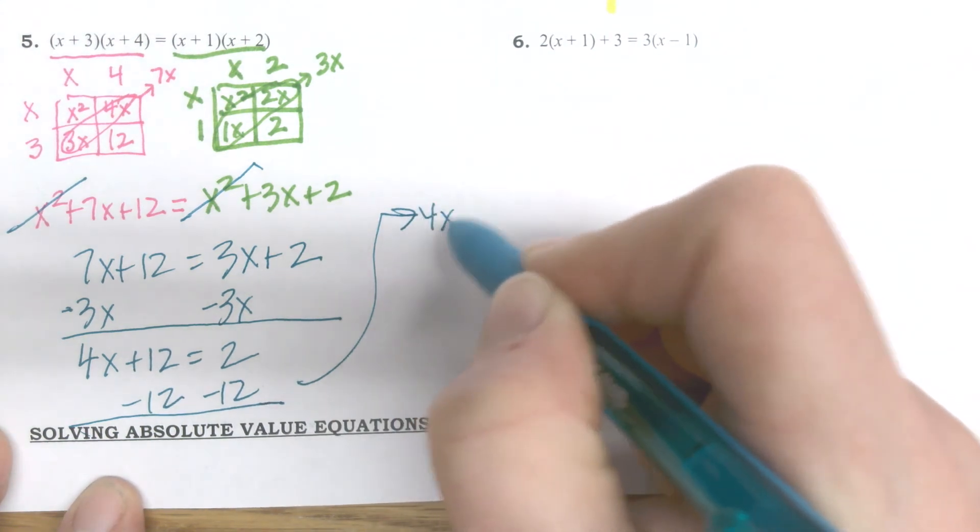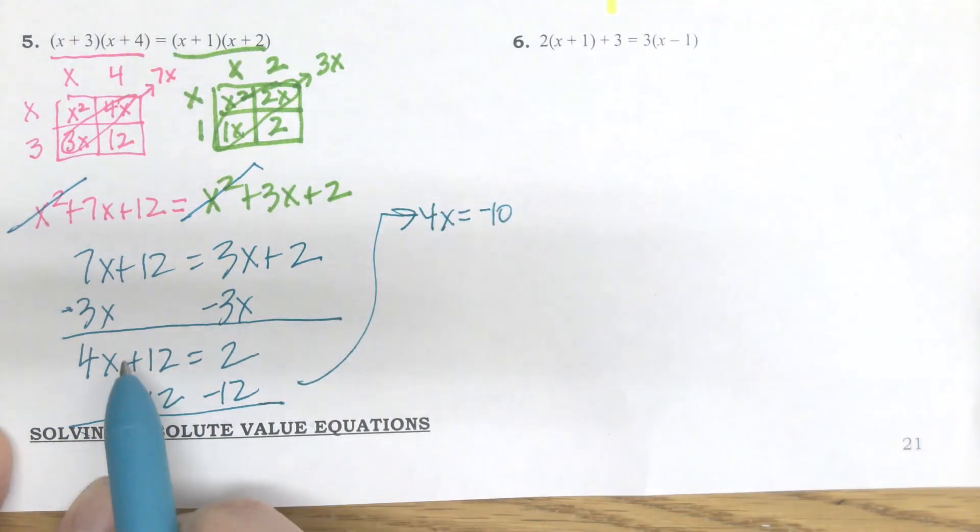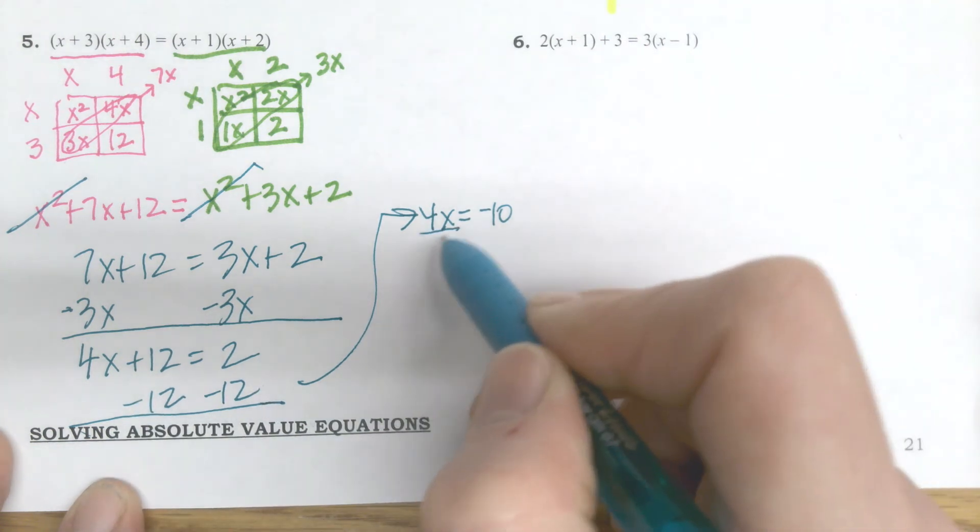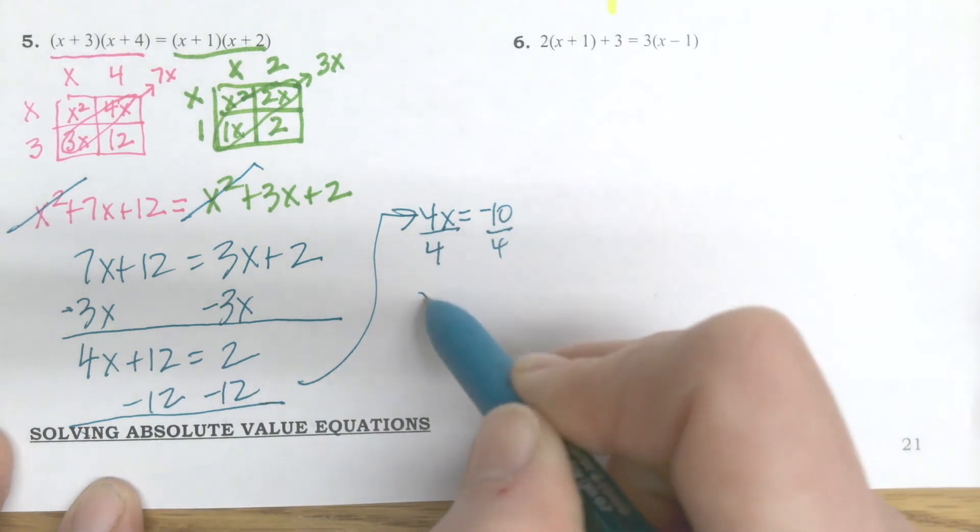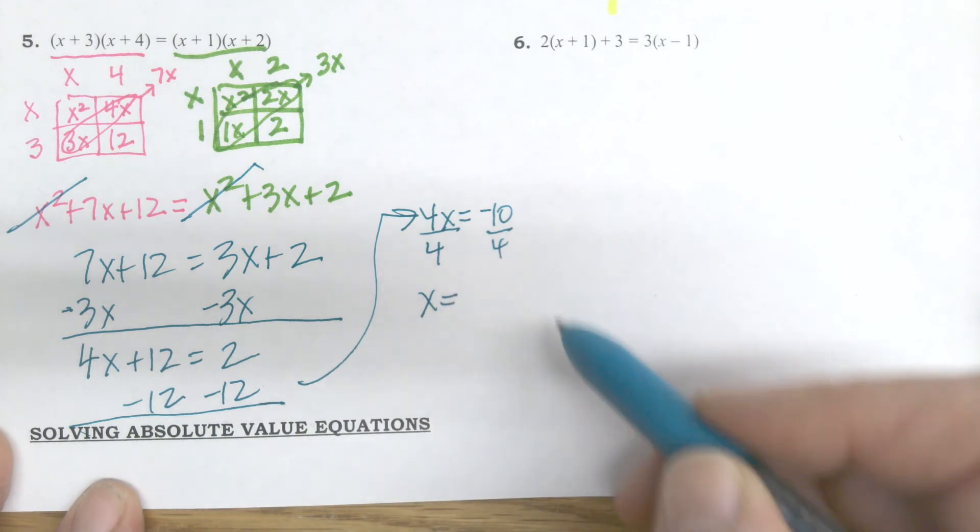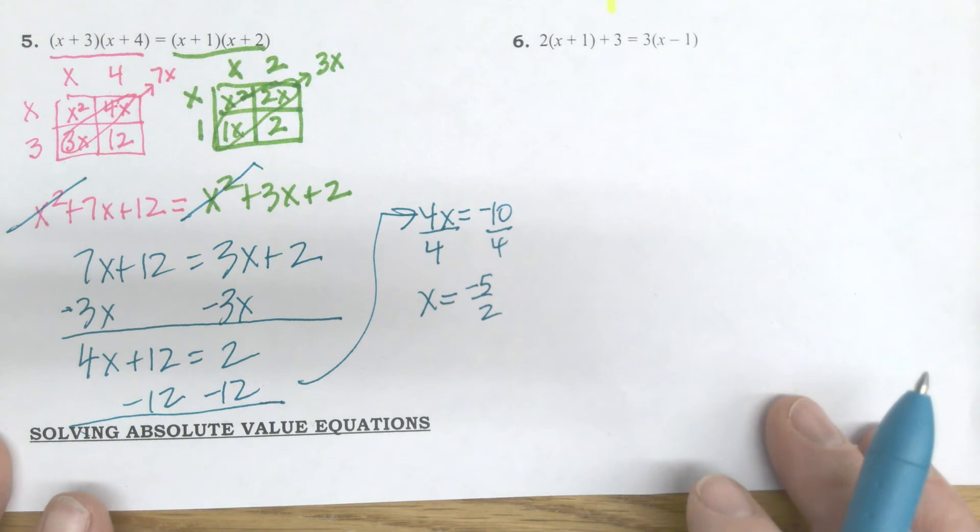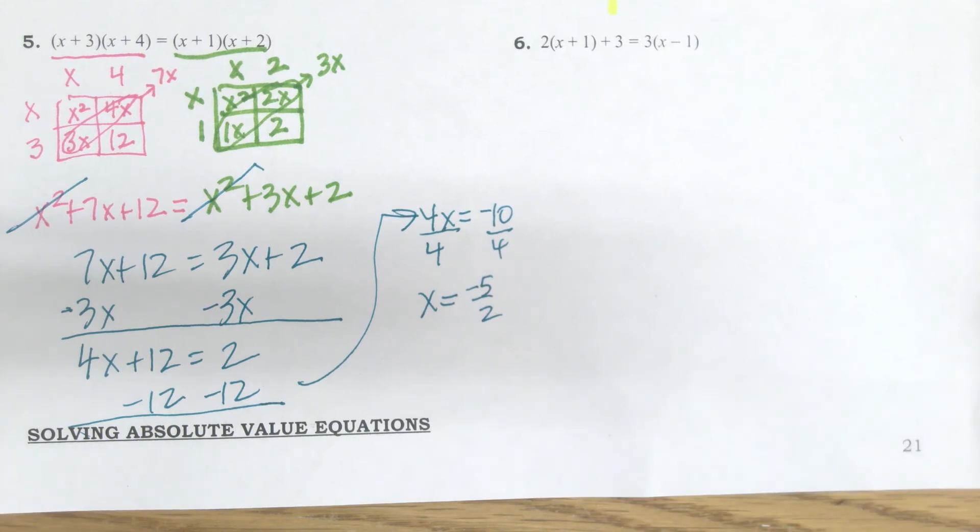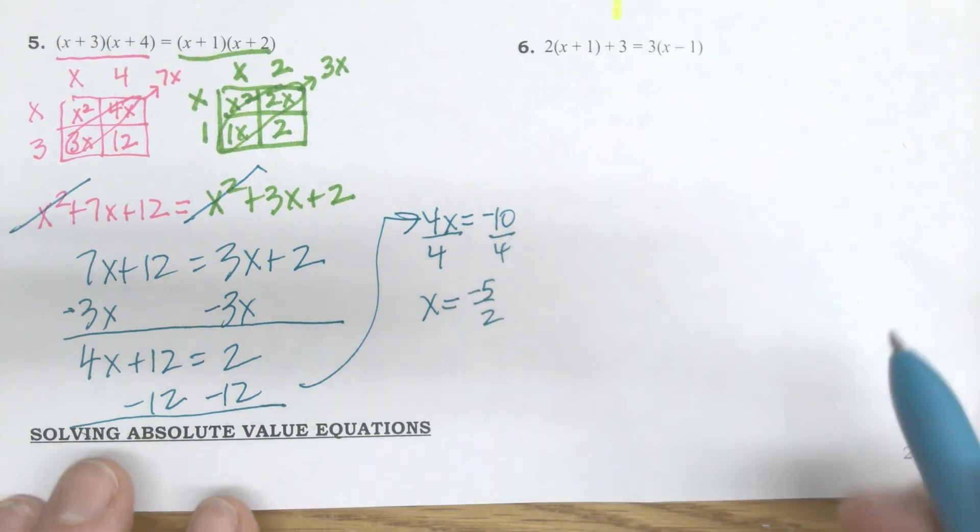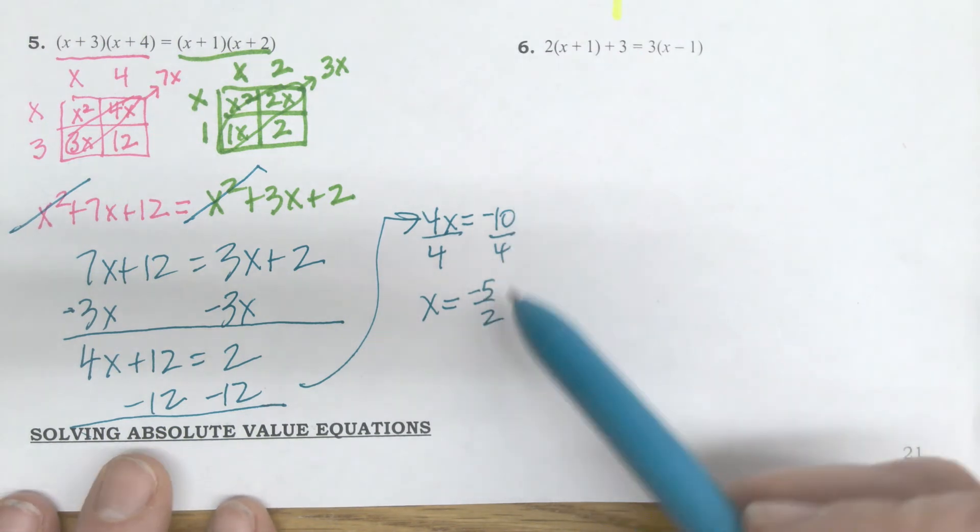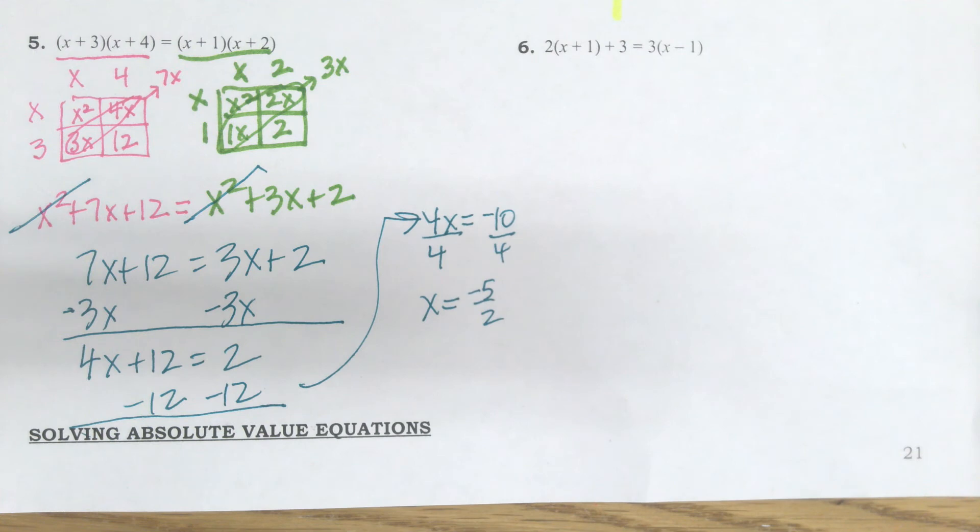So I have 4x equals negative 10 because I got rid of the 12. And then this doesn't go in evenly and that's not a big deal. I'll just reduce it. Or if you feel like it, plug it in your calculator. It really doesn't matter. I usually just reduce it because I'm lazy. And I notice that I can take two out of both of them, so I'll leave it like that. And it's okay to not have that full answer.